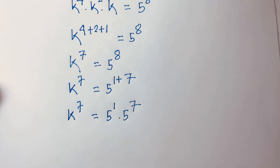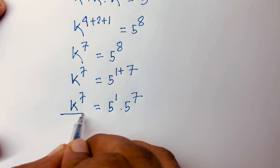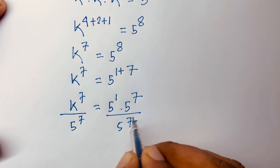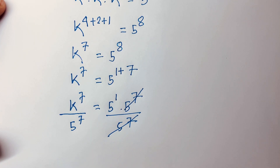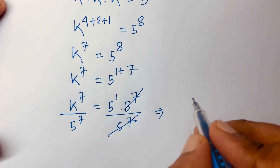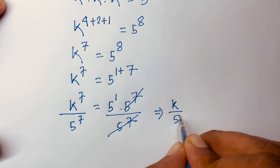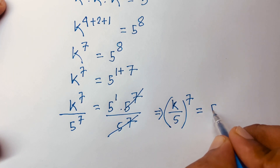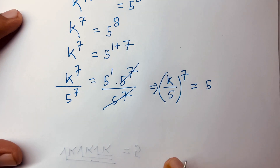I use exponential rules, then I divide both sides by 5 to the power 7. The 5 to the power 7 on both sides cancels. Since the exponents are the same, according to exponential rules I can say (k/5) to the power 7 is equal to 5 to the power 1.